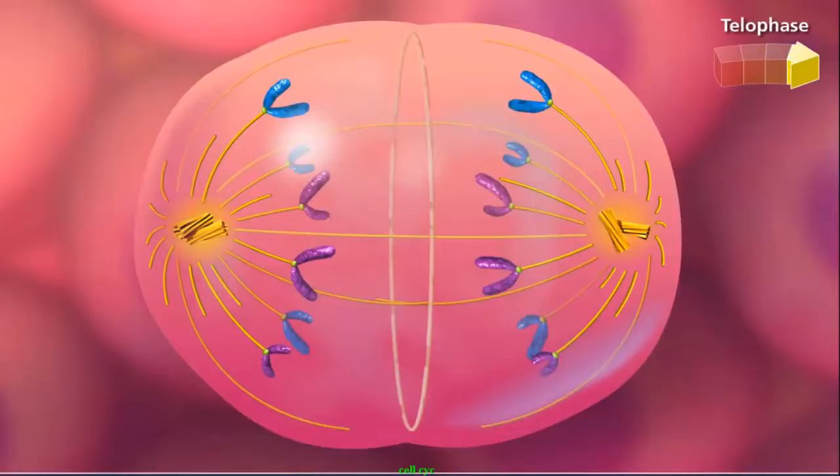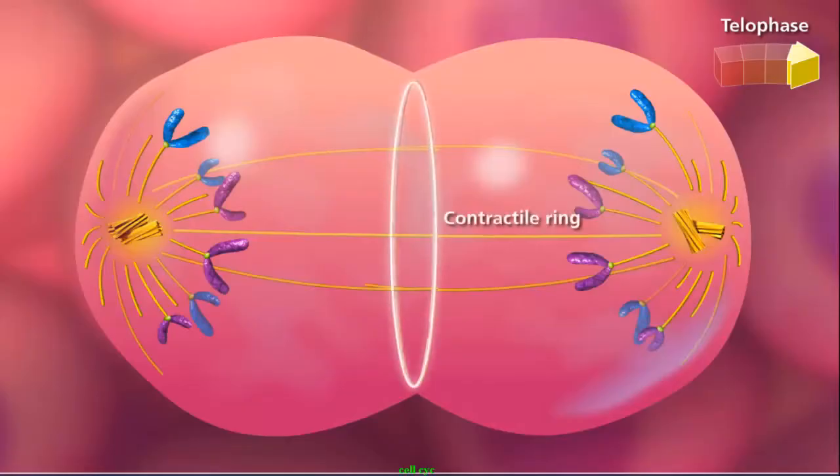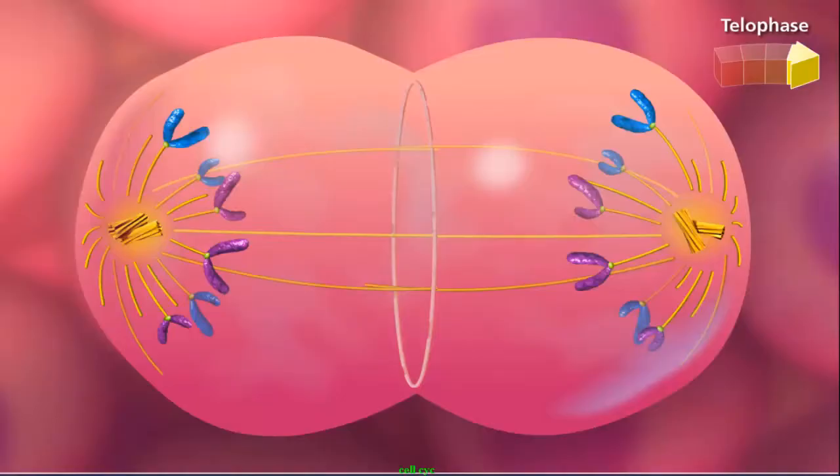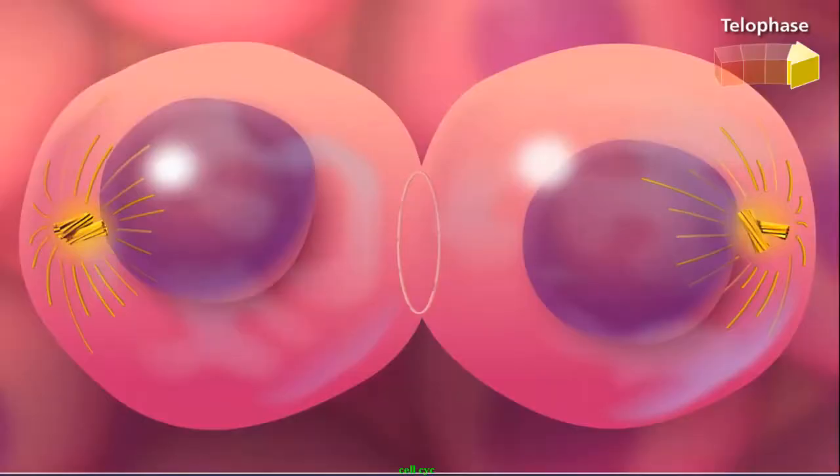At telophase, a cleavage furrow forms in the center of the cell. This indentation is made from a constricting belt of actin filaments surrounding the inside of the cell's circumference. Chromosomes cluster at opposite poles and begin decondensing as the nuclear envelope reforms around them.